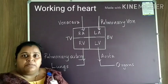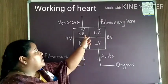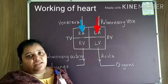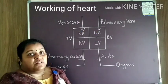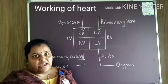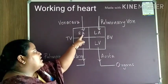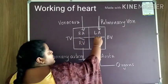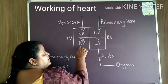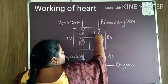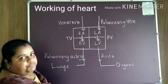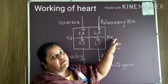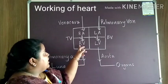The right atrium gets filled with impure blood and the left atrium gets filled with pure blood simultaneously. When both chambers get fully filled, they contract. The atria contract, and the valves between the right atrium and right ventricle, and between the left atrium and left ventricle, open. Blood from the right atrium enters the right ventricle and from the left atrium into the left ventricle. When all the blood enters the ventricles, the tricuspid valve and bicuspid valve close.